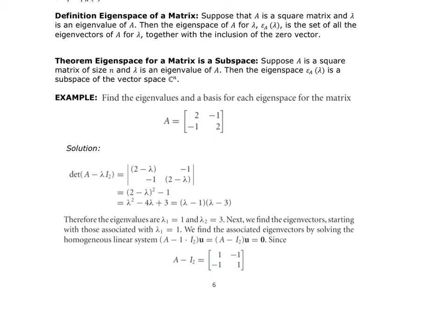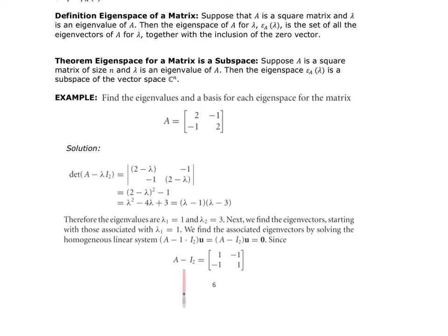Setting up det(A − λI) for a 2×2 matrix: multiplying (2−λ) by itself and subtracting 1 gives (2−λ)² − 1. Expanding and combining like terms gives λ² − 4λ + 3, which factors to (λ−1)(λ−3), so eigenvalues are 1 and 3.